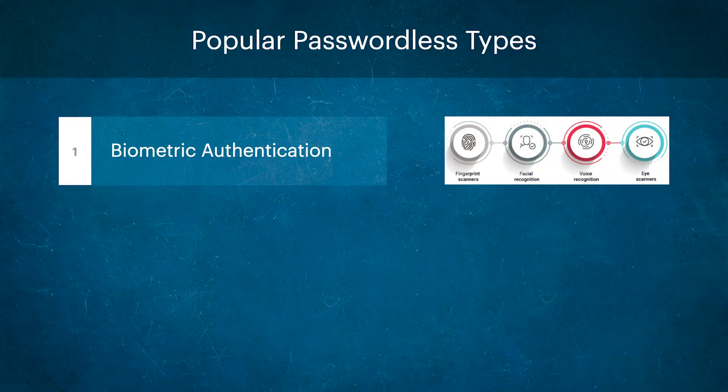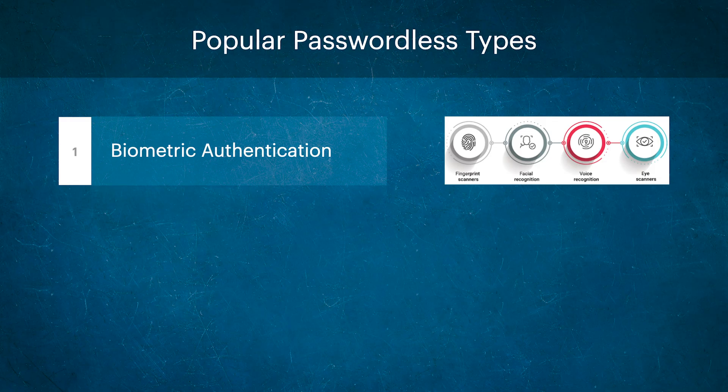The first method is biometric authentication. This uses a user's unique physical or behavioral characteristics such as fingerprints, facial recognition, or voice recognition to verify their identity. Biometric authentication is becoming increasingly popular as it is easy to use and difficult to impersonate. For example, Apple's Touch ID and Face ID are among the most popular biometric authentication methods.